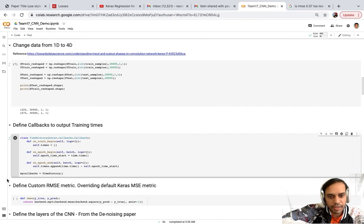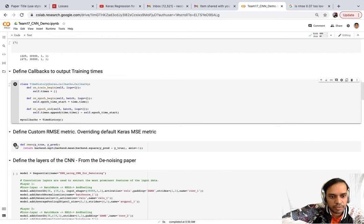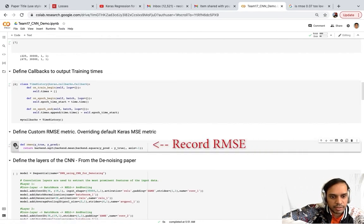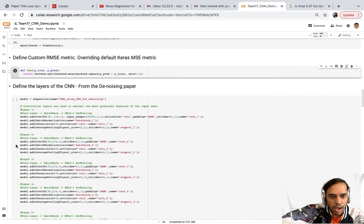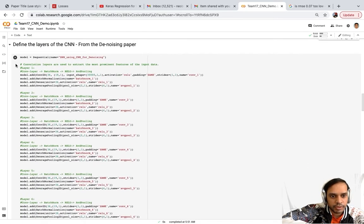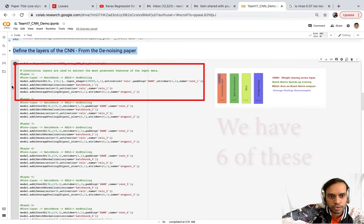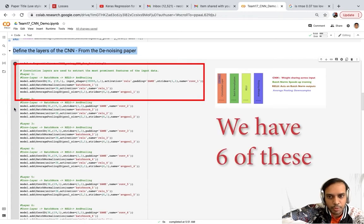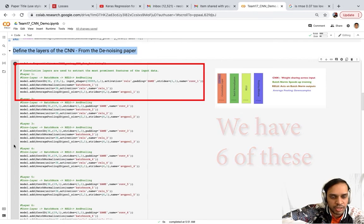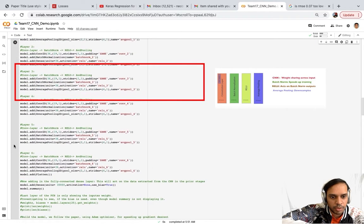I've defined some callbacks to keep track of the training times and another function to record the RMSE value. Next section is used to define the neural network. First four lines of code are used to define the convolutional layer, the batch normalization layer, the ReLU layer and the pooling layer. We've got six of these repeated and that's what was required in the paper.